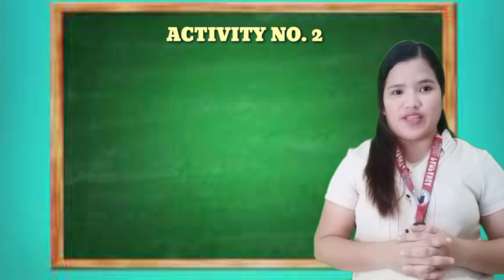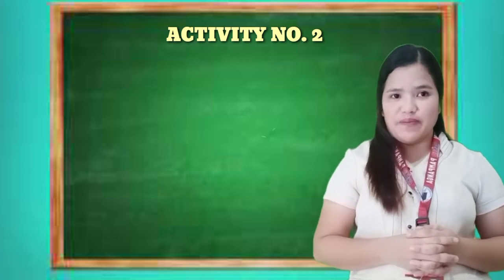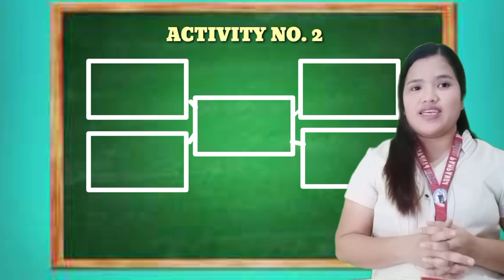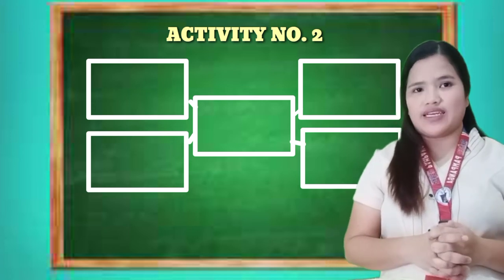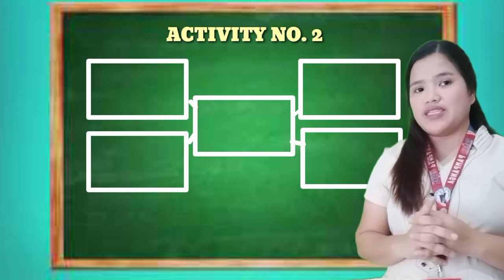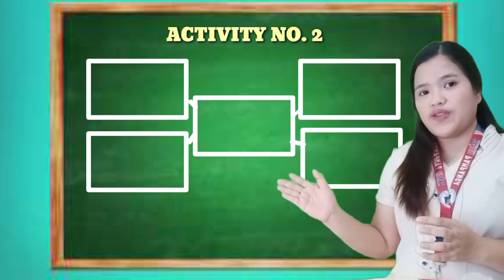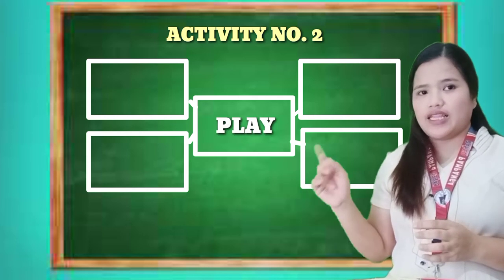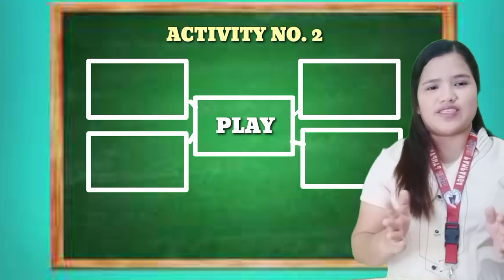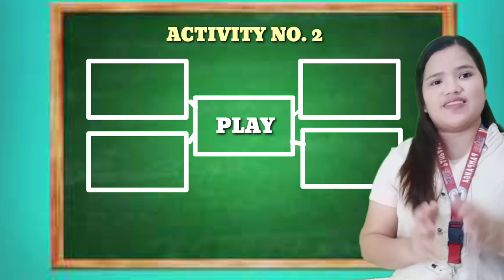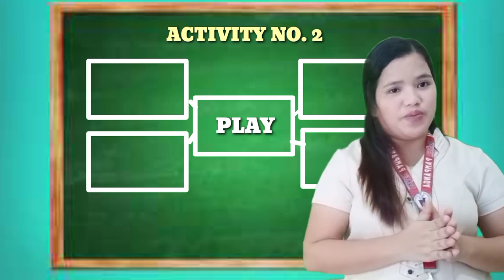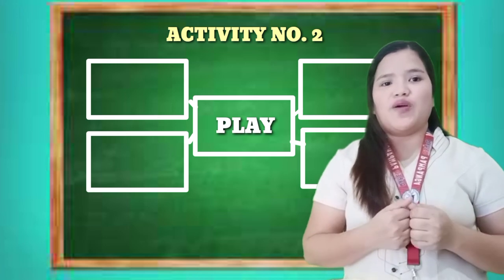For your next activity, you have to draw a concept map like this one and show your ideas, knowledge, and experience about play. You can write your answer on a clean sheet of paper. In the middle, write the word 'play,' and then fill the four boxes with words you associate with the word play. You can accomplish this activity all throughout this session, so make sure you keep your notebook, paper, and ballpen with you as we discuss one-act play.